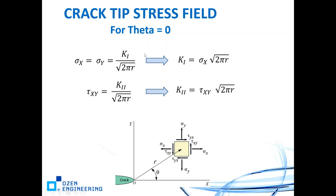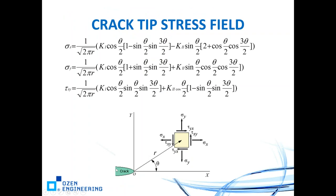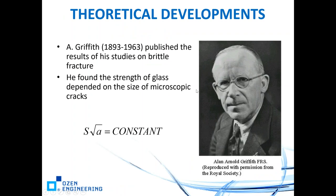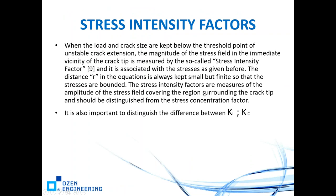In this formulation, theta is the angle ahead of the crack tip. When theta is set to zero, the formulas reduce to: K sub 1 = sigma times sqrt(2 pi r). That is the stress intensity factor in mode 1. K sub 2 refers to mode 2, which is a shearing mode. What Griffith found experimentally was verified by the Williams solution.